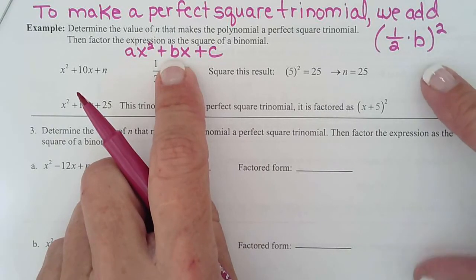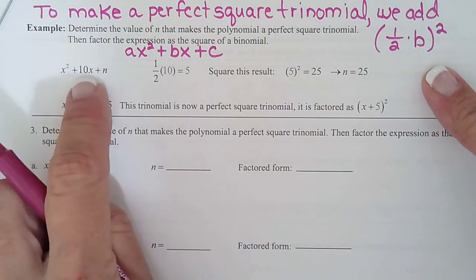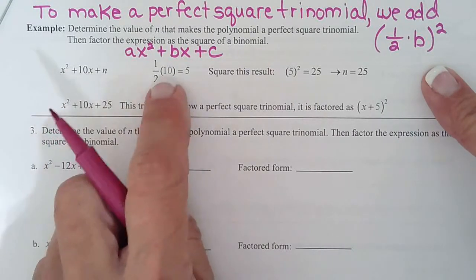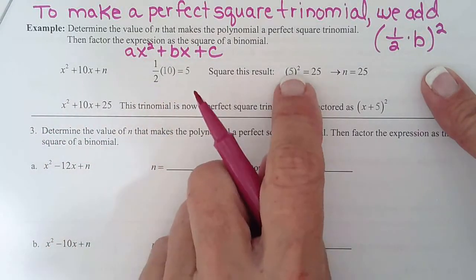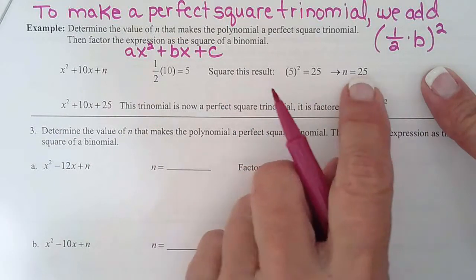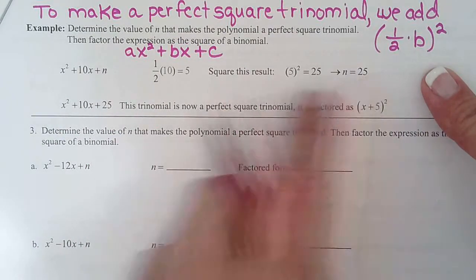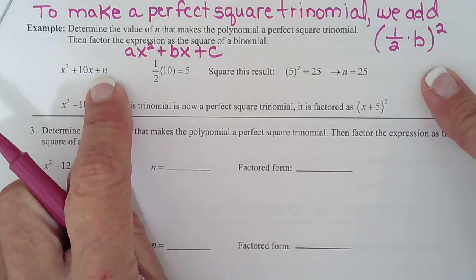That's how we make a perfect square trinomial. You can see this one, b is 10, so I do half of 10, which is 5, and then I square 5. So the number I need to add, the n, is 25.